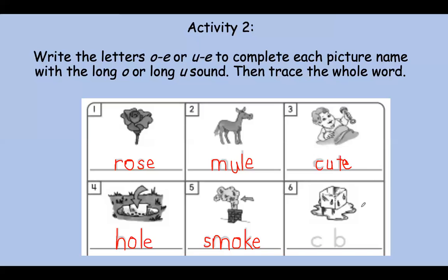Number six. This is a cube — like an ice cube. What do you hear in the middle of cube? Is it that long O or long U? Say it slowly. Cube. Fantastic — it is long U. Let's trace cube. Terrific.